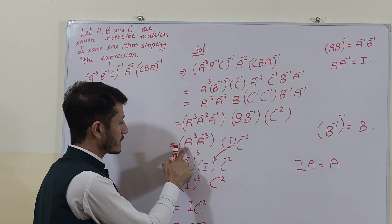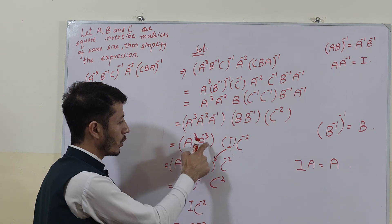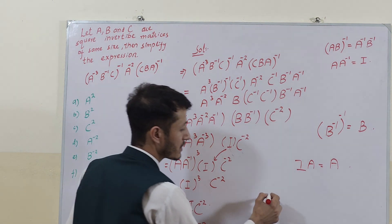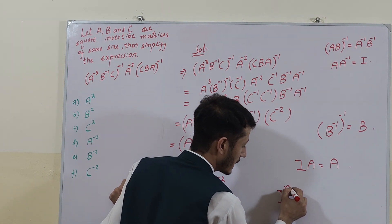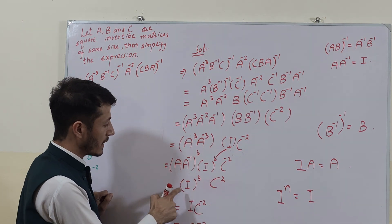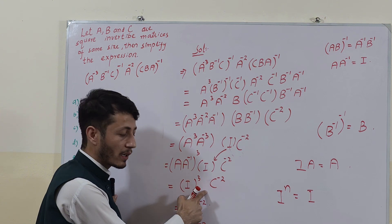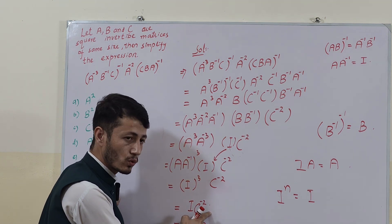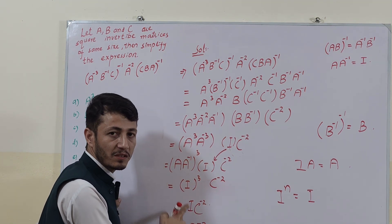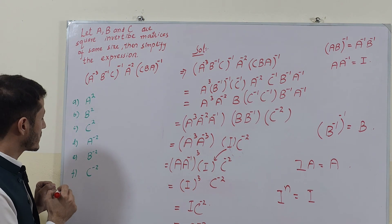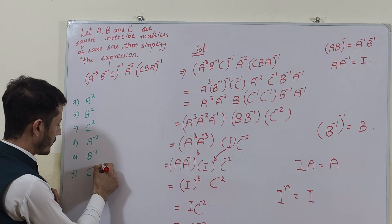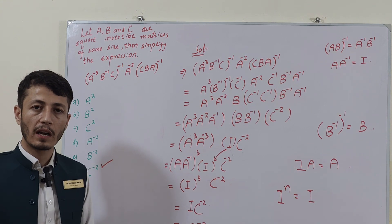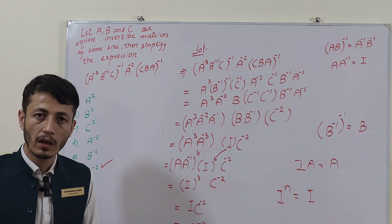From here I can write A · A^(-1) whole power 3. Since A · A^(-1) gives us the identity matrix, and identity matrix to any power N gives the identity matrix, this gives us identity matrix power 3, which is just identity matrix times C^(-2). The final answer is C^(-2), which matches option F. Thank you for watching. Allah Hafiz.